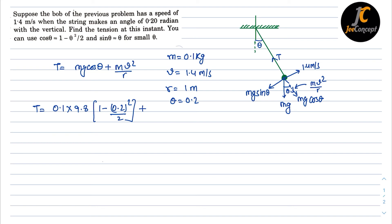So m is 0.1 into 1.4² upon 1. Now if we solve that, it will become 0.96 plus 0.196, so this will become 1.1564